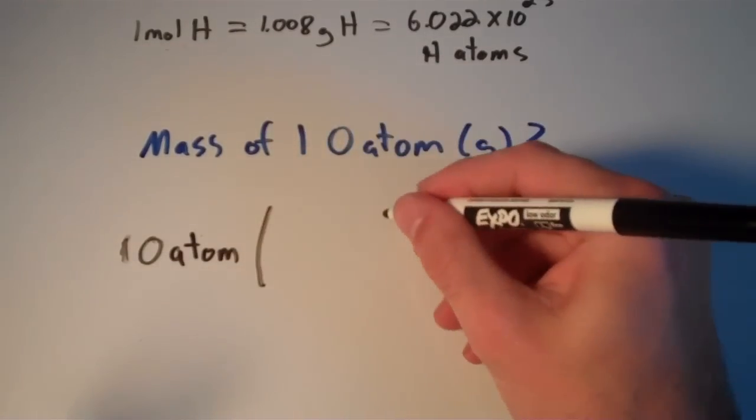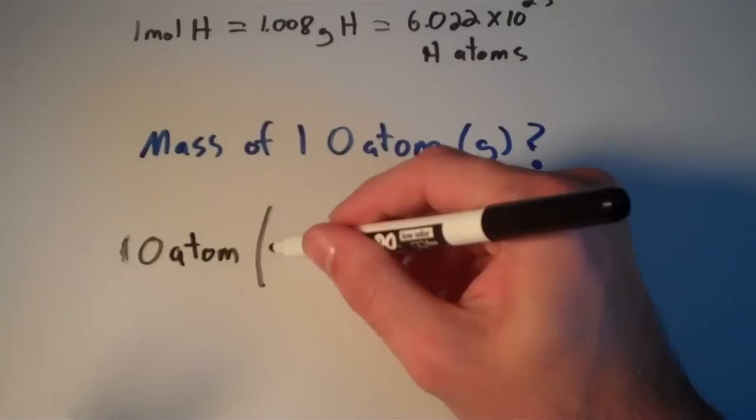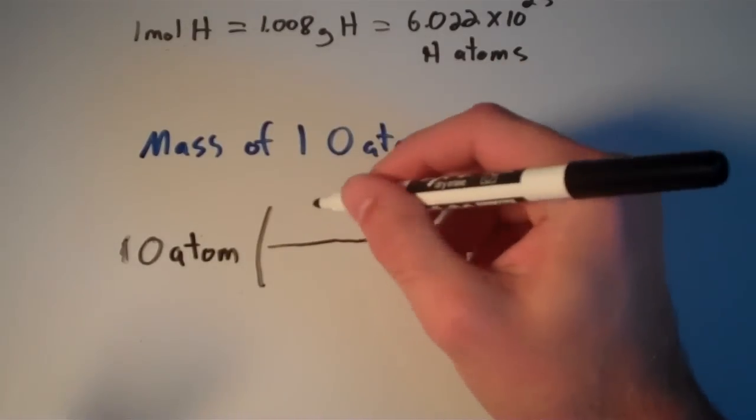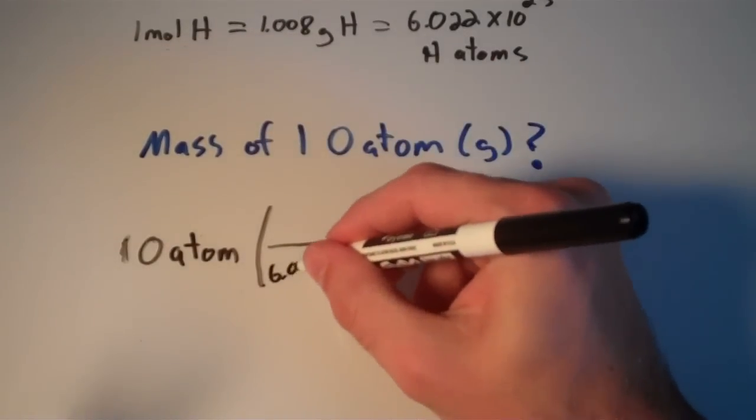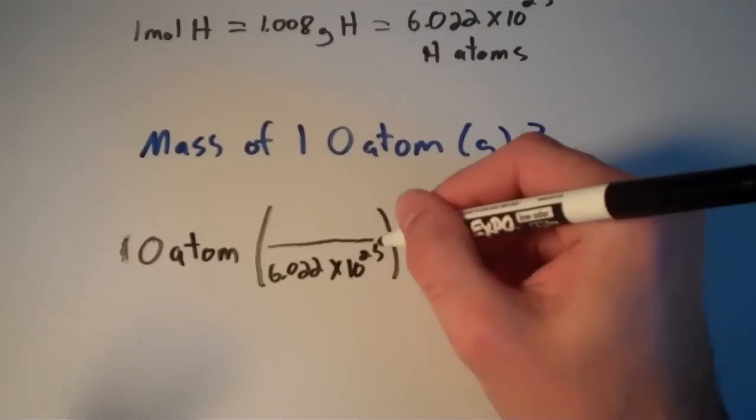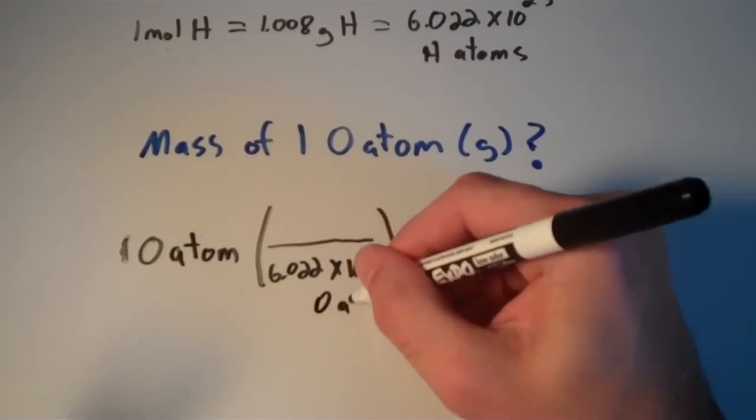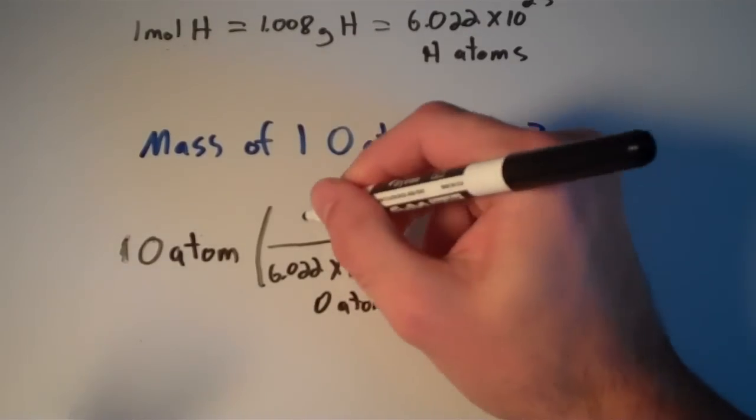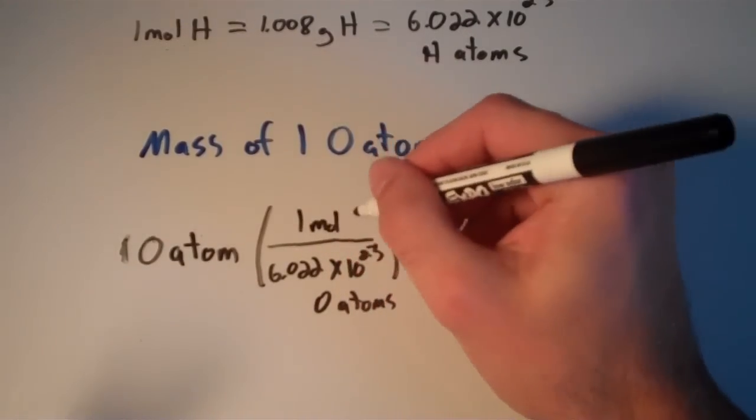And we know from Avogadro's number, from the mole concept, that for every 6.022 times 10 to the 23rd oxygen atoms, we have 1 mole of oxygen.